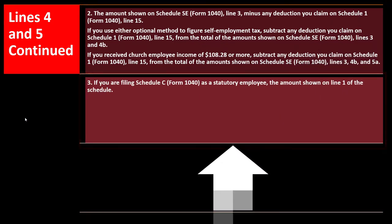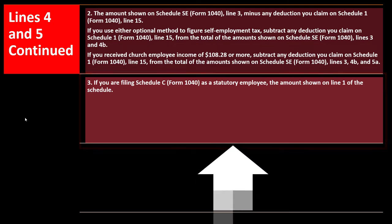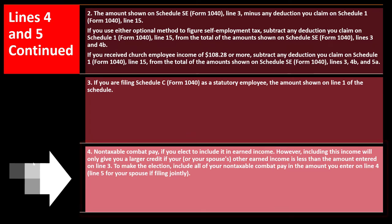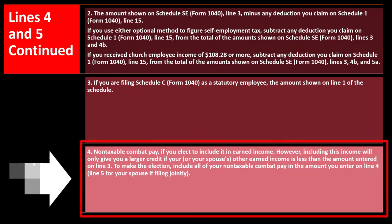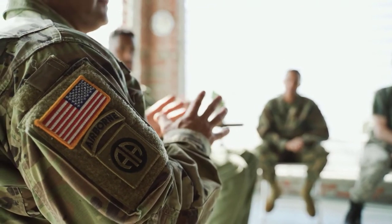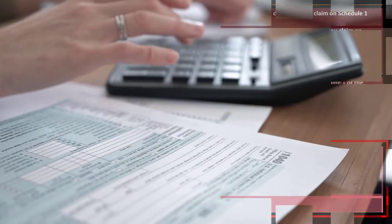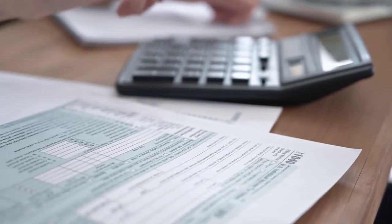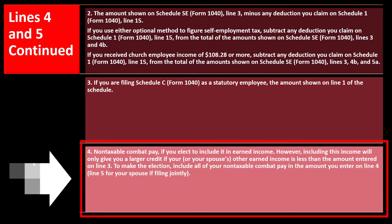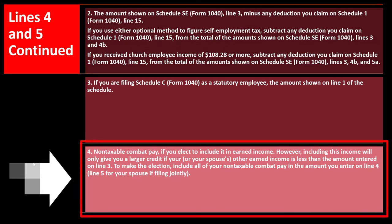Item 4: non-taxable combat pay — if you elect to include it in earned income. Military members don't have to include combat pay in income, but for these credit calculations you may want to include it to access the credit, since income is often needed for the credit calculation. This can increase your credit only if your or your spouse's other earned income is less than the amount on line 3.